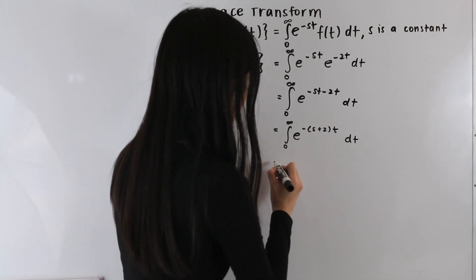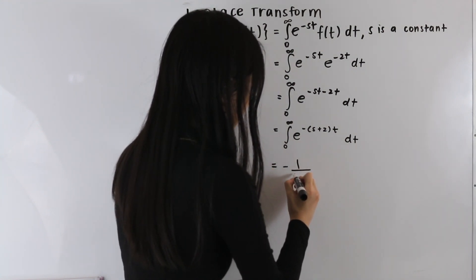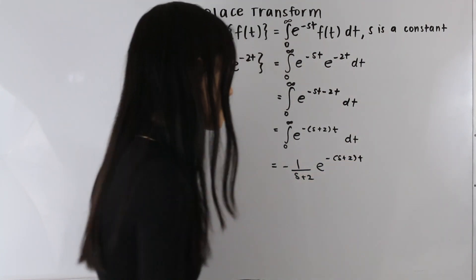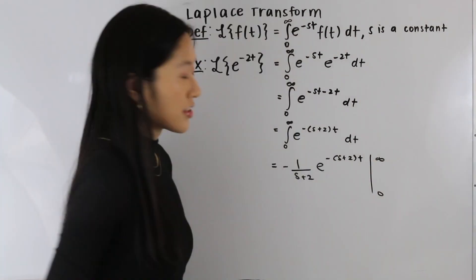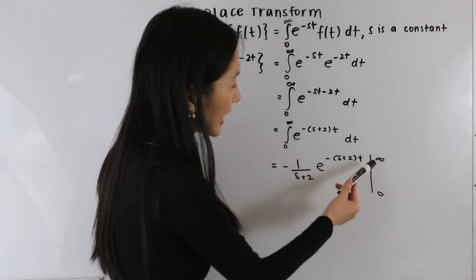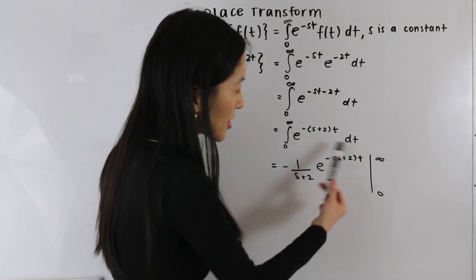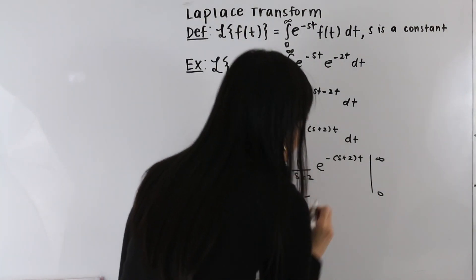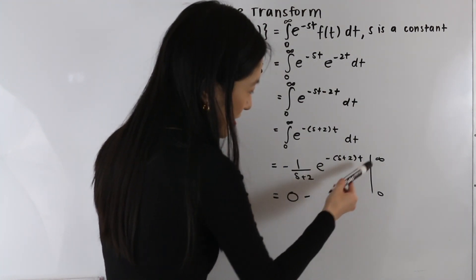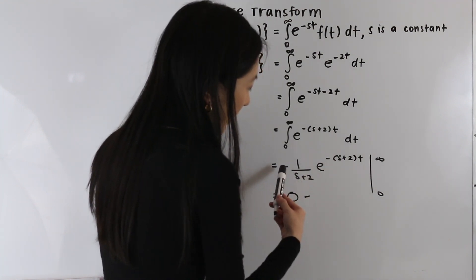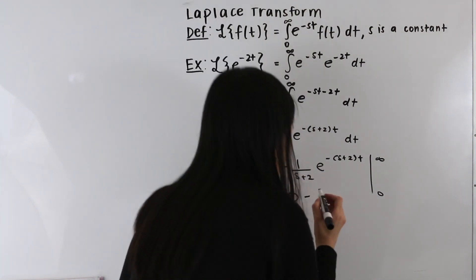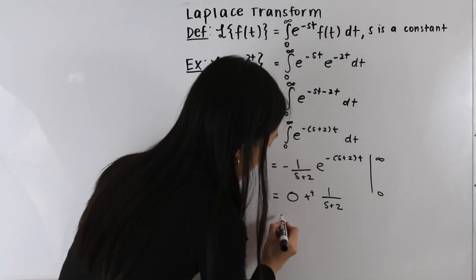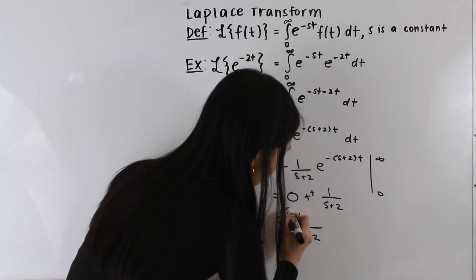Now let's integrate this. We end up with negative 1 over s plus 2, times e to the negative s plus 2 times t, evaluated at zero and infinity. Taking the limit as t approaches infinity, the exponential term decays to zero, so the first term is zero. Plugging in zero, we get e to the zero which equals 1, giving us negative 1 over s plus 2 times 1. The two negatives combine to a plus, and we end up with 1 over s plus 2. That is our final answer.